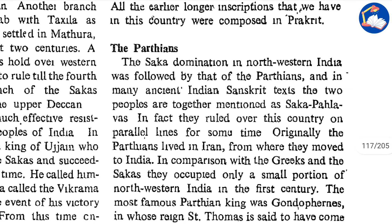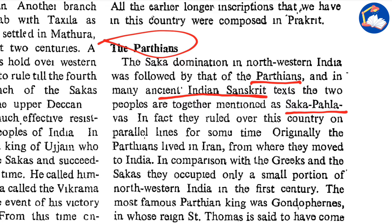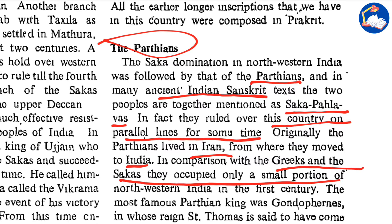The Saka dominion in northwestern India was followed by that of the Parthians. In many ancient Indian Sanskrit texts, the two peoples are together mentioned as Sakapahlavas — they ruled over this country on parallel lines for some time. Originally the Parthians lived in Iran, from where they moved to India. In comparison with the Greeks and Sakas, they occupied only a small portion of northwestern India in the first century AD.